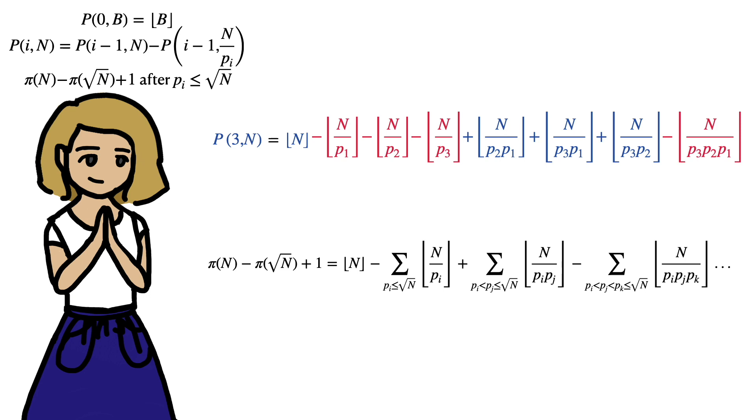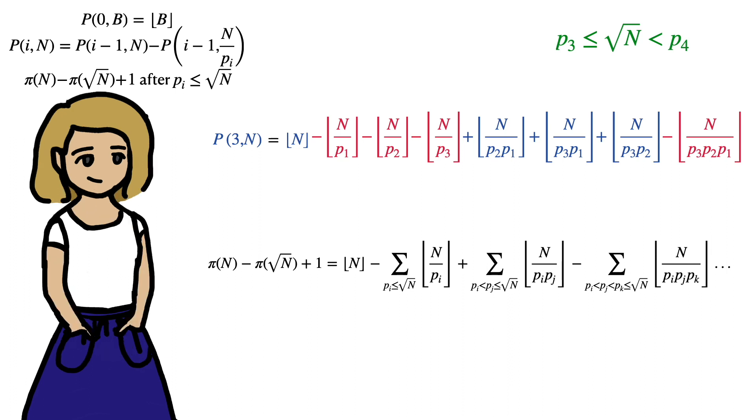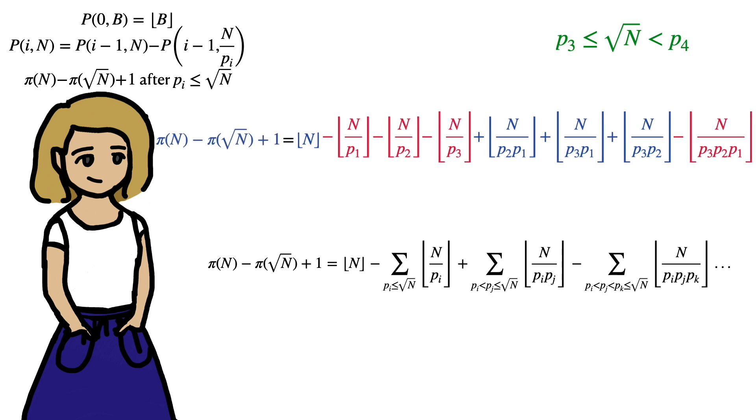P(3,n) is equal to the sum of all these floor terms. And we can see that this looks a lot like Legendre's formula from before. And in particular, if we say the square root of n is between p_3 and p_4, P(3,n) equals π(n) minus π(√n) plus 1. So, this is a case of Legendre's formula.